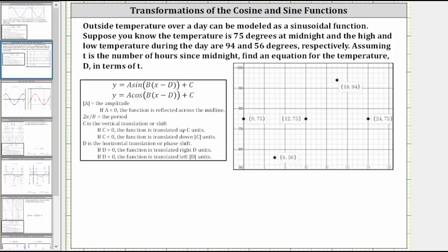Outside temperature over a day can be modeled as a sinusoidal function. Suppose you know the temperature is 75 degrees at midnight and the high and low temperature during the day are 94 and 56 degrees respectively. Assuming T is the number of hours since midnight, find an equation for the temperature D in terms of T.